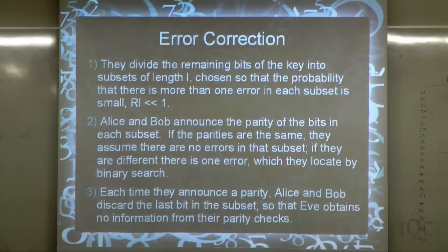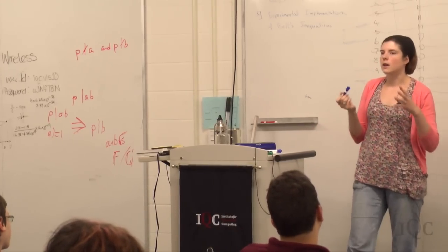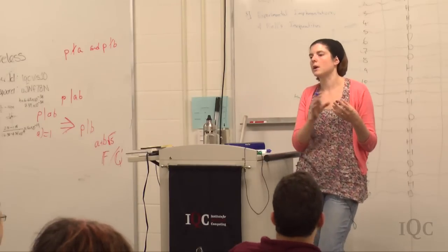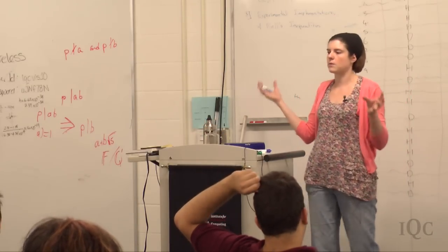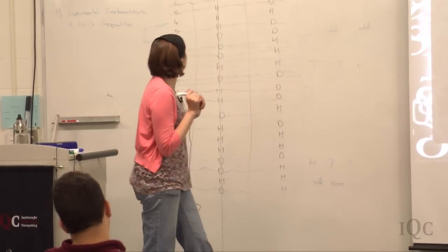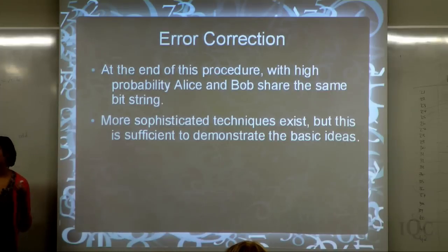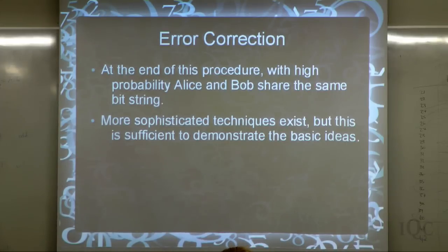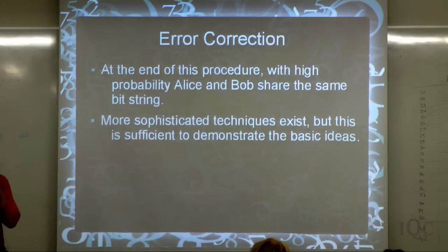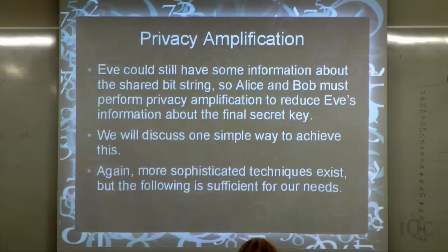Each time Alice and Bob announced a parity they had to throw one bit away so they weren't giving Eve any more information about the key. In the general case, if the subset were much longer, they would locate the error by binary search — splitting the subset in half and repeating. At the end of this procedure with high probability Alice and Bob share the same bit string. More sophisticated classical error correction techniques exist; this simple version demonstrates the key ideas.